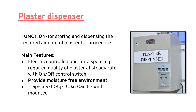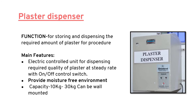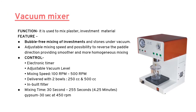We will now talk about various lab equipment. The plaster dispenser stores and dispenses the required amount of plaster, providing a moisture-free environment. Next is the vacuum mixer, which is used to mix plaster and investment materials. Its main feature is to provide a bubble-free, homogeneous mixture; mixing time ranges between 30 to 255 seconds — for example, gypsum is mixed at 30 seconds at 450 RPM.